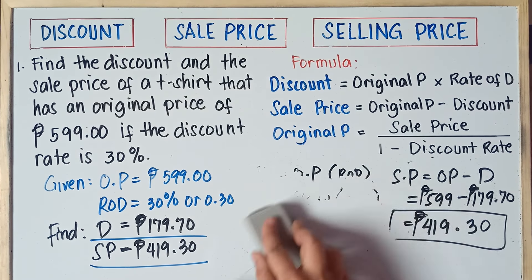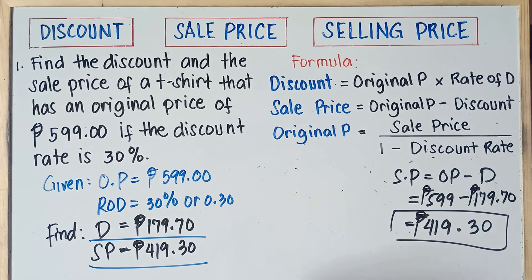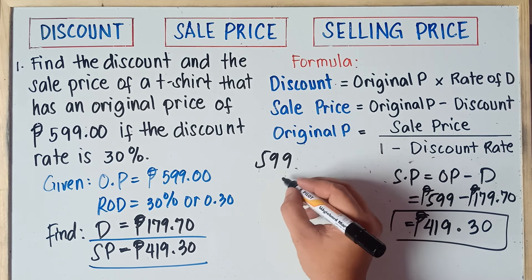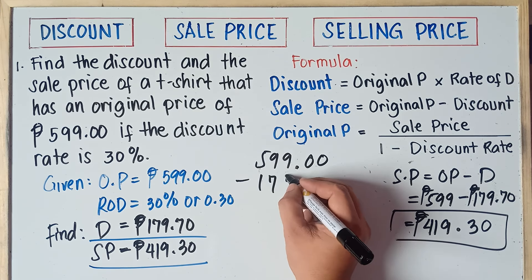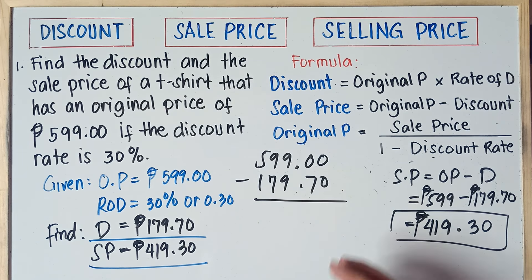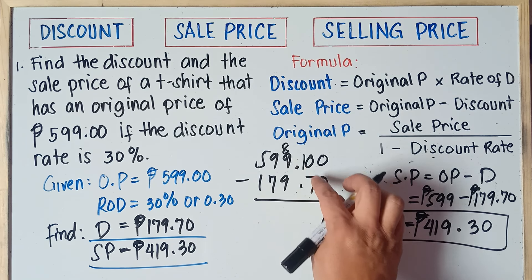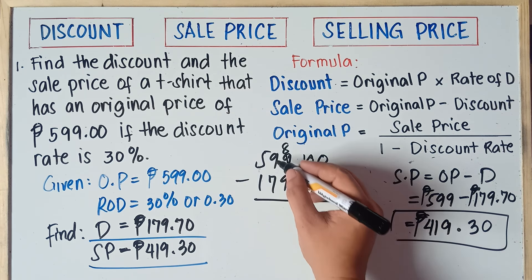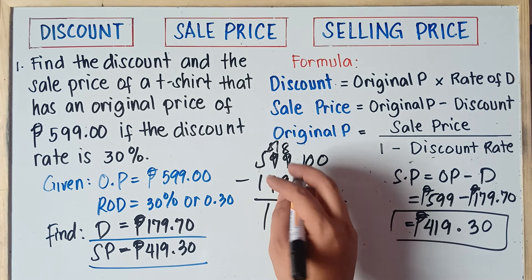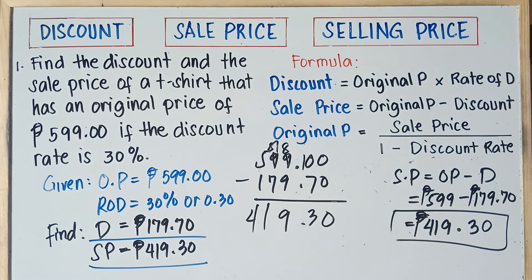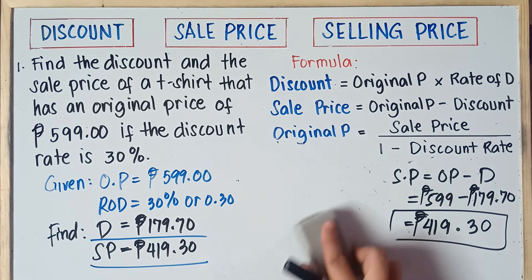Just in case the teacher will not allow you to use a calculator, you can subtract manually. Write 599.00 minus 179.70. 0 minus 0 is 0. 0 minus 7 — borrow 1, this becomes 10, so 10 minus 7 = 3. 8 minus 9 — borrow again, 18 minus 9 = 9, 8 minus 7 = 1, 5 minus 1 = 4. Same answer: 419.30.